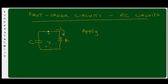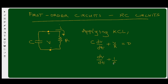A node is a point between two circuit elements. When we apply KCL to the circuit, the node voltage is v and this is a reference node. The current in the capacitor is C dv/dt, and the current through the resistor is v/R. Setting the sum to zero — assuming all currents leaving the node — and dividing through by C, we get: dv/dt + (1/RC)v = 0. This is the first order differential equation for an RC circuit.